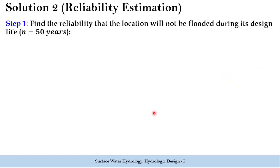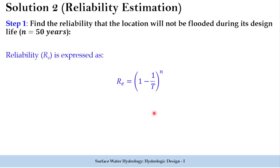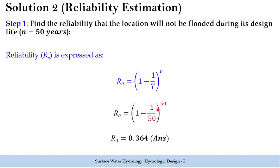Here n equals 50 years is the life of the structure. We use the formula: reliability Re equals 1 minus (1 divided by T) raised to the power n, where T is the return period and n is the lifetime. Substituting both values of 50, we get 1 minus (1/50)^50, which yields a reliability of 0.364.